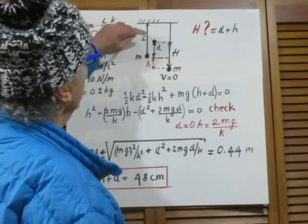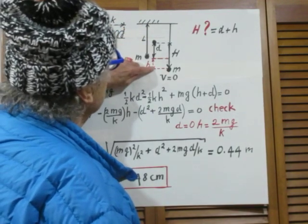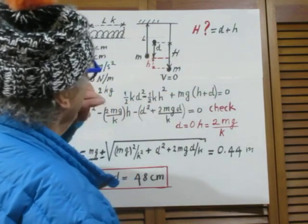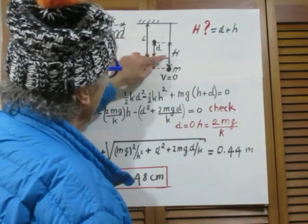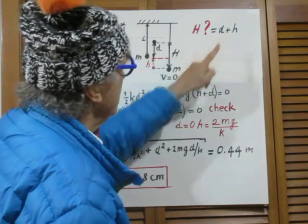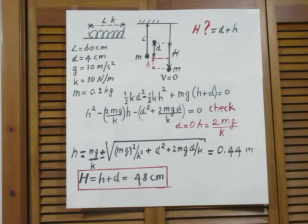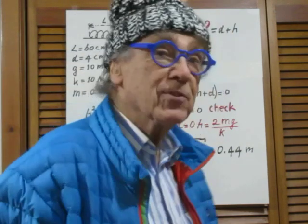The work done by gravity in going from here to there is Mg H, or Mg capital H. From here to here, Mg capital H, and capital H is H plus D. So this is your equation, the second order equation in H, which is clearly high school algebra.